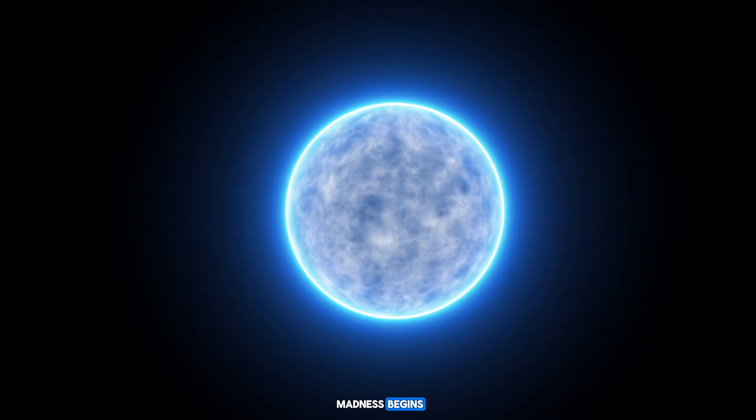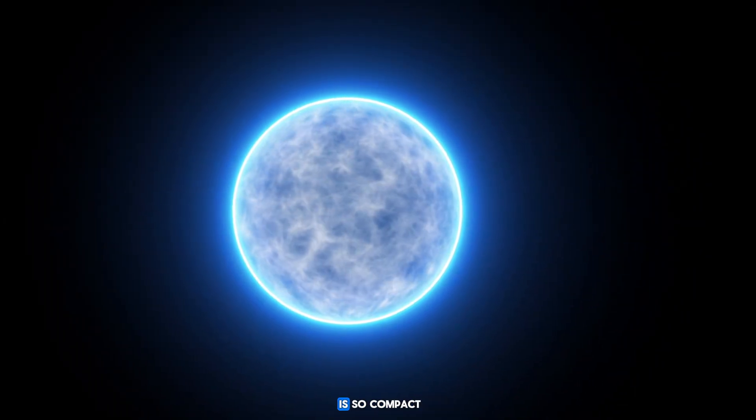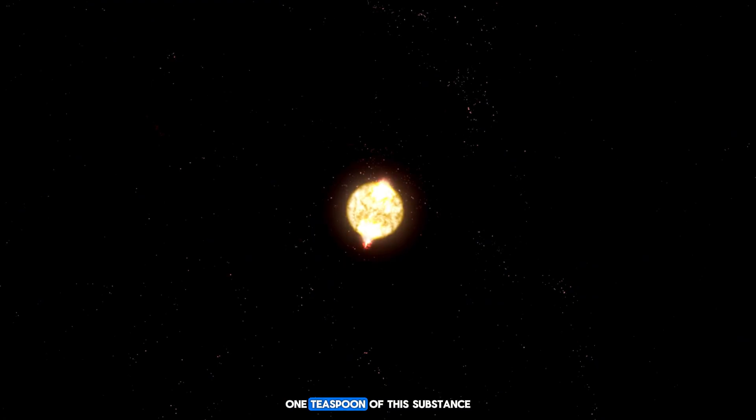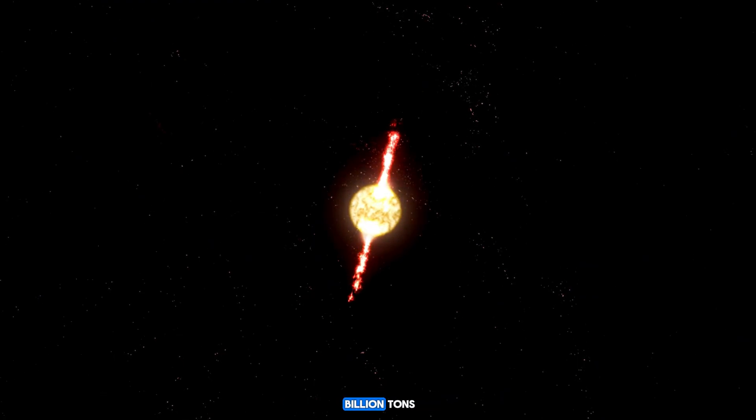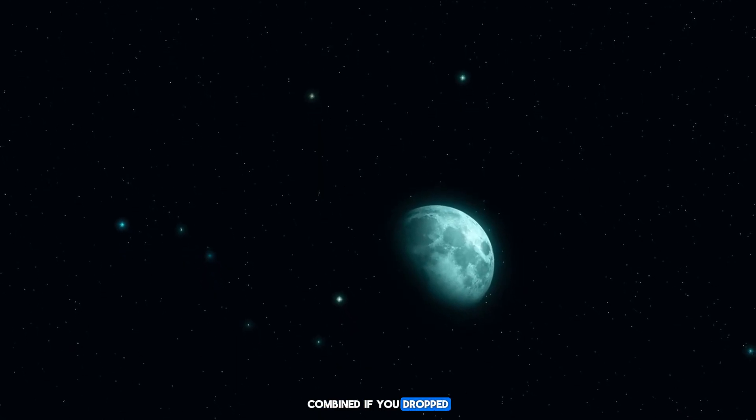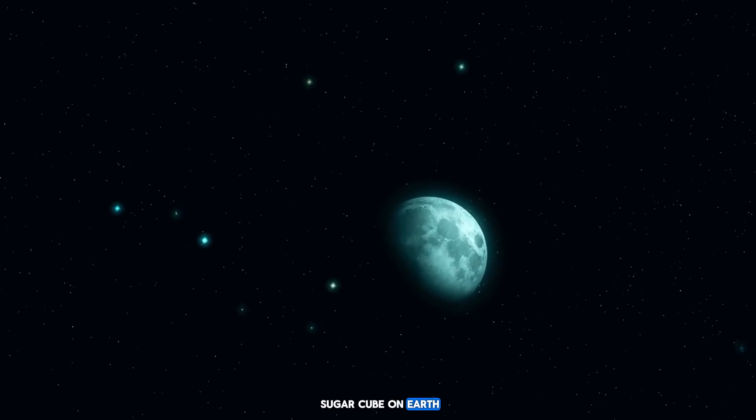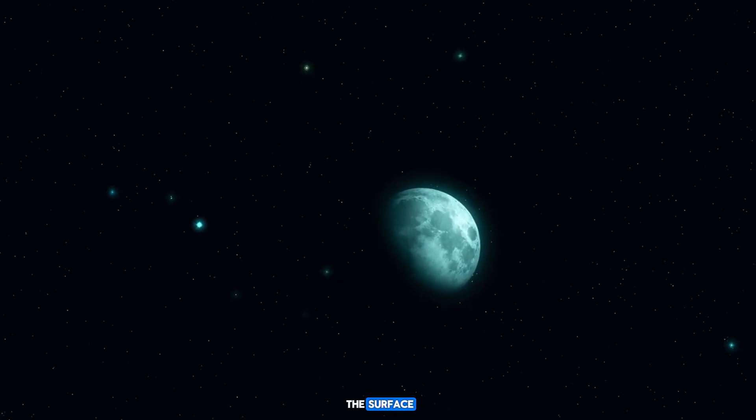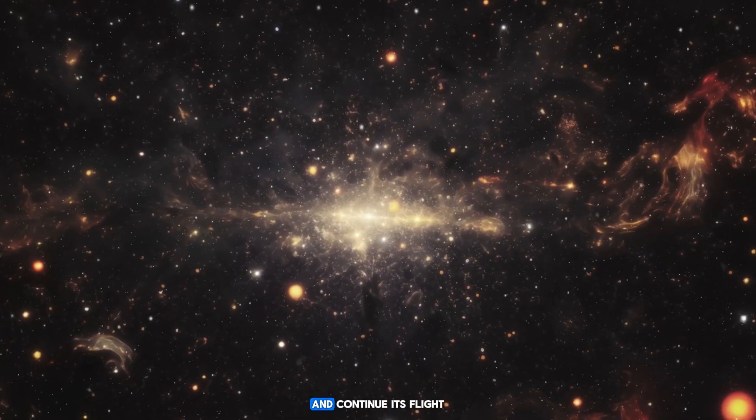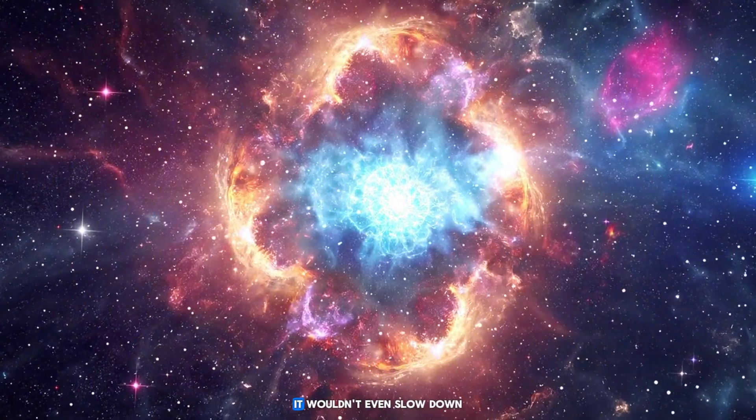This is where the madness begins. Because a neutron star is so compact, it has an incredible density. One teaspoon of this substance would weigh over a billion tons—that's more than all the buildings in New York City combined. If you dropped a piece the size of a sugar cube on Earth, it wouldn't stay on the surface. It would pierce the Earth's crust, tear through the mantle, and continue its flight to the core.